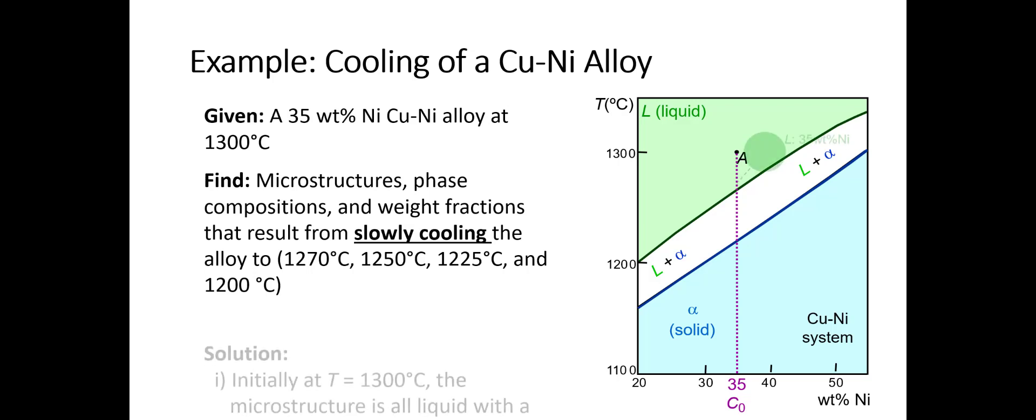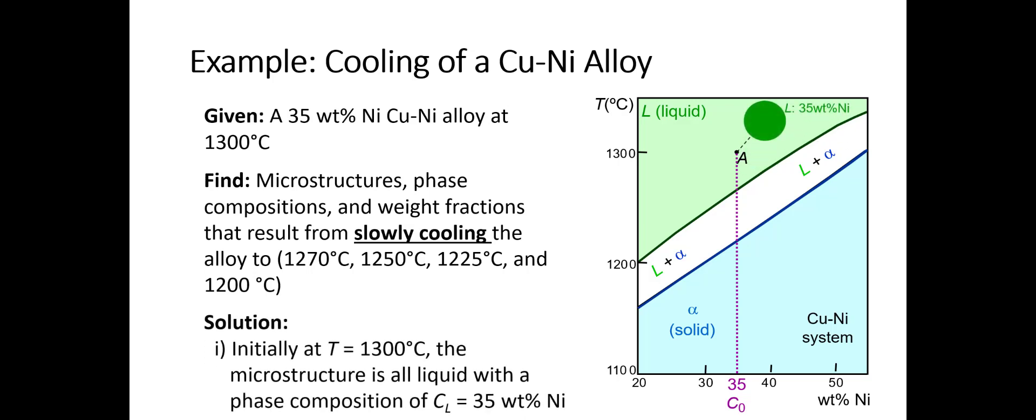Let's first look at what the microstructure looks like initially. Initially, it's hopefully straightforward. At 1300 degrees, we have a pure liquid, so the only phase present is liquid. It's at 35 weight percent nickel, and its phase amount or weight fraction is just one.